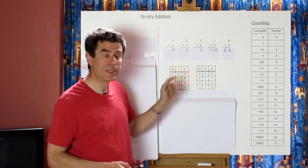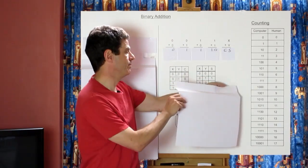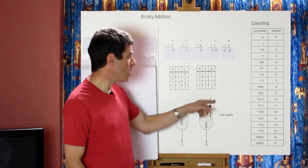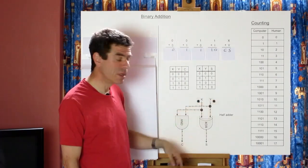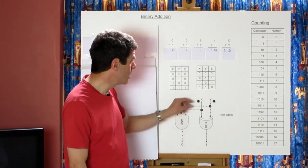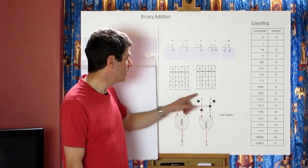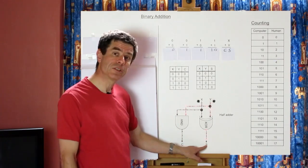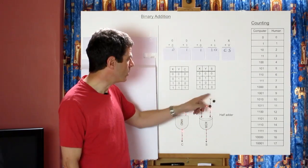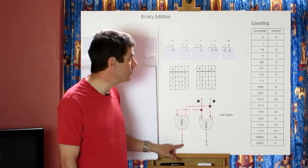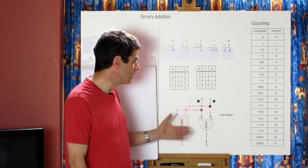So we can do this kind of 1-bit addition if we have a combination of an AND function and an exclusive OR function, and that looks like this. We have x plus y giving sum and carry. Going through the options: 0 plus 0 gives a sum of 0 and a carry of 0; 1 plus 0 gives a sum of 1 and a carry of 0; 0 plus 1 gives a sum of 1 and a carry of 0; and 1 plus 1 gives a sum of 0 and a carry of 1. This combination of an exclusive OR and an AND is referred to as a half adder.